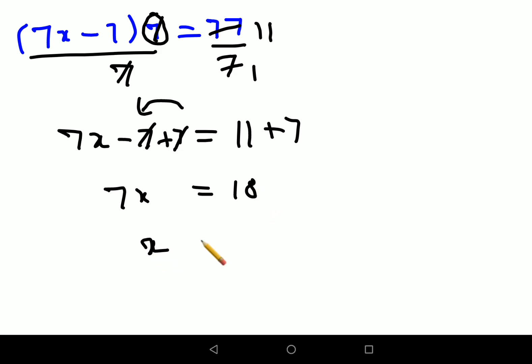To find the value of x, you divide both sides by 7. So the value of x comes out to be 18 upon 7, or I can say the value of x is 2 4/7.